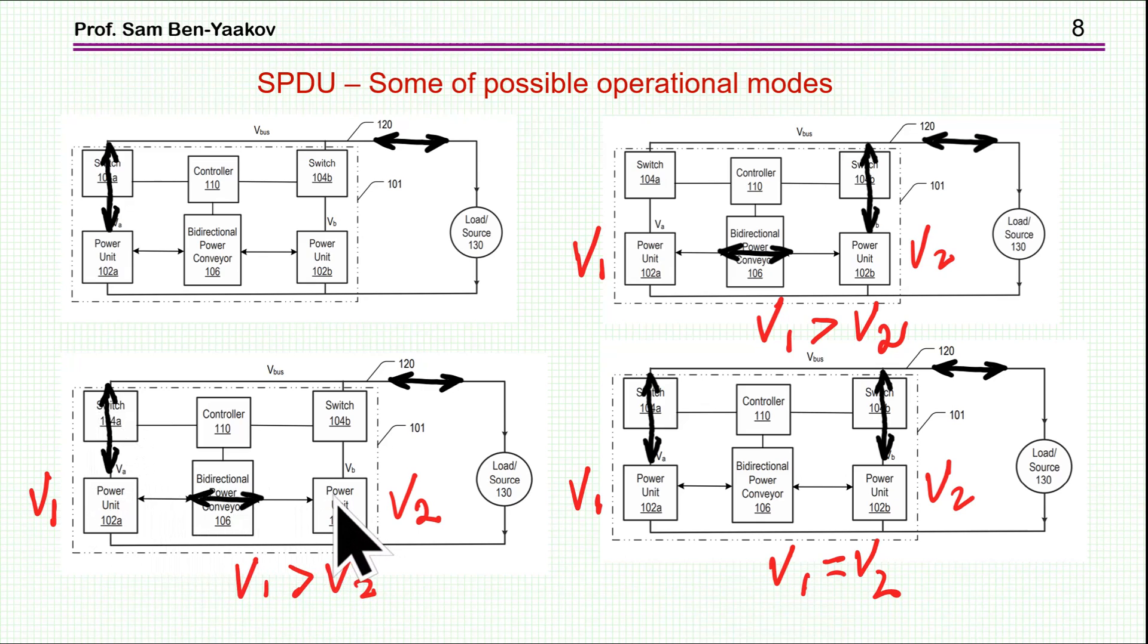But then we can have one battery connected to the bus, and then if this battery has a lower voltage we can use some of the power from this battery on demand.